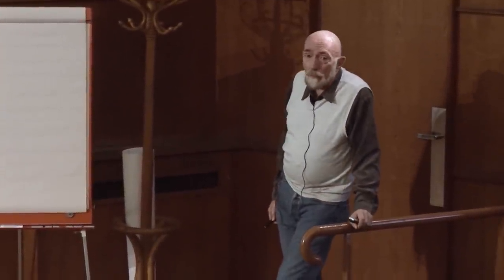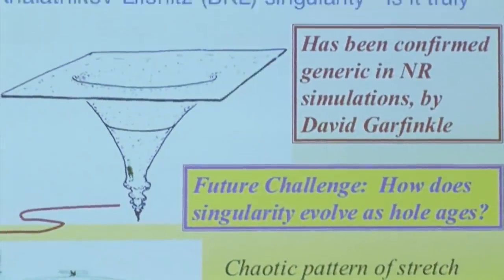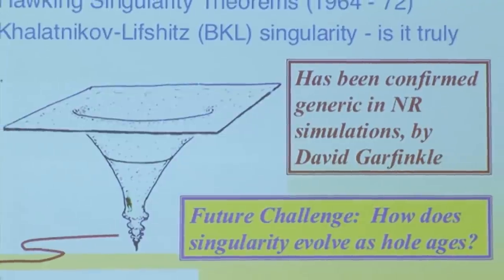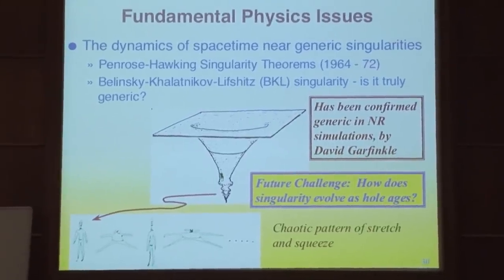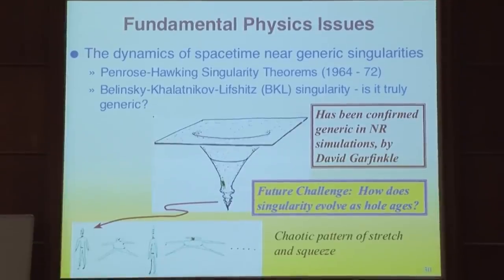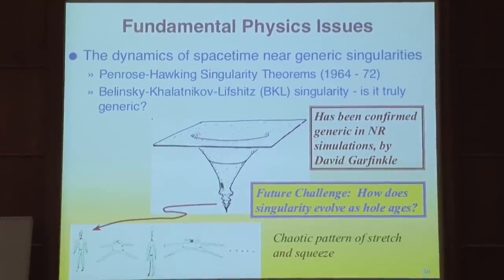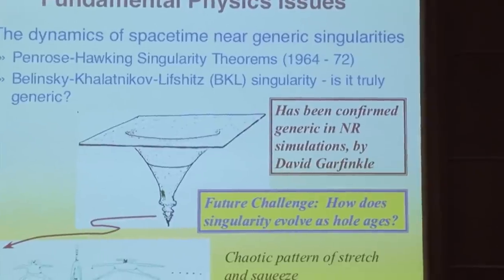There's a lot of fundamental physics to be done with numerical relativity. An example from the past is David Garfinkel's verification through numerical relativity simulations of the genericity of the Belinski-Khalatnikov-Lifshitz singularity structure—a chaotic singularity of stretches and squeezes you would feel falling into a singularity, such as the singularity at the center of a black hole. This was discovered by Russians in the late 1960s and early 1970s; there was great skepticism in the West as to whether their approximations were valid. Numerical simulations have now verified they were right.